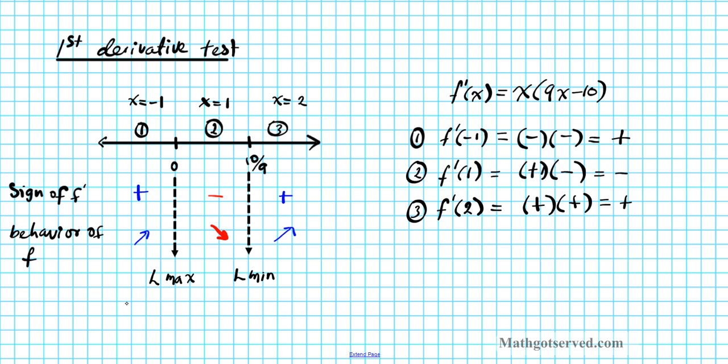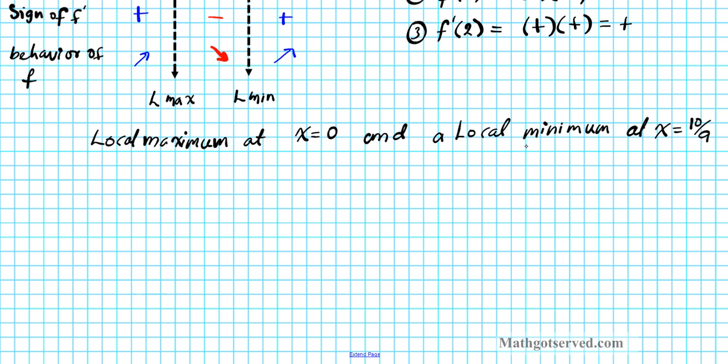So let's go ahead and write our answers. We have local maximum at x equals 0 and a local minimum at x equals 10 over 9. So these are our two extrema. This is a maximum and that is a minimum.